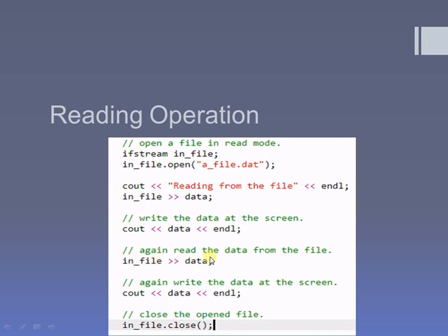The next data is read from the file using the infile file pointer, and that data is output to the screen again. In this way we can perform the read operation from the file. After performing all tasks, we close the file. How to open a file is already explained in my previous video on opening modes, where I explained different opening modes, and in the primitive operations video I explained the syntax for open and close.